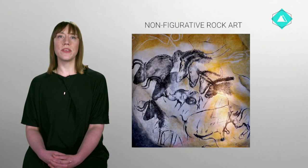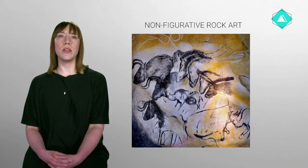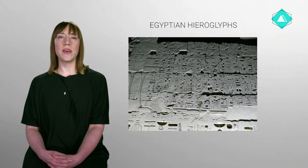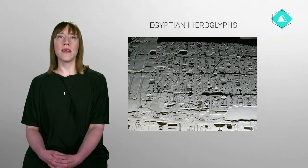The earliest non-figurative rock art dates back approximately 40,000 years, when humans were telling stories using symbolic imagery. Around 5,000 years ago, Egyptian hieroglyphs — a written language using pictograms instead of letters — appeared.